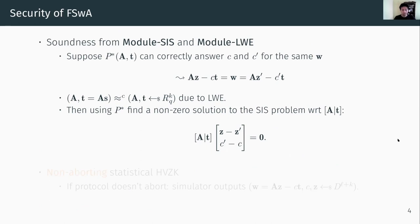What about security? At the high level, soundness of the Fiat-Shamir with abort identification protocol can be argued as follows. We assume that some cheating prover can correctly answer distinct challenges C and C prime. Then thanks to the LWE assumption, we can argue that the public key T is indistinguishable from a uniformly chosen module element. Using this cheating prover, we are able to find a non-zero solution to the SIS problem with respect to the random matrix A concatenated by the public key T. This way we can reduce the soundness of the protocol to SIS and LWE.